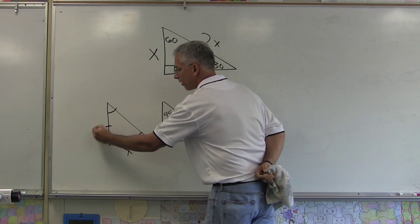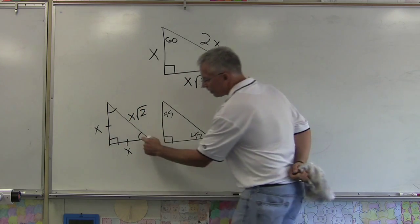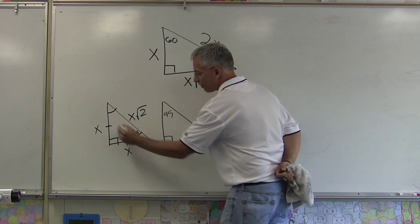So if these angles are the same, that means these sides are the same, so I'll call them both X. The hypotenuse is always X√2. If these angles are the same and that's a right angle, these guys got to be 45 each.